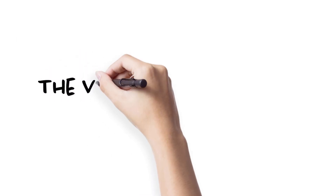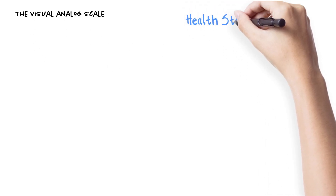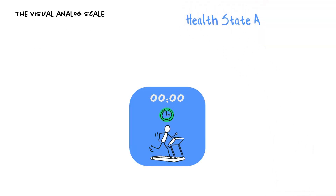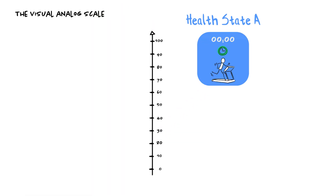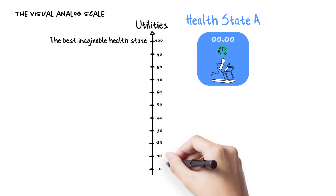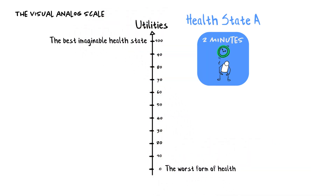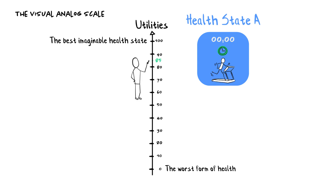Let's start with the most frequently used direct methods. The visual analog scale is the simplest approach to get a utility value. Imagine you want to value a health state A. You present the respondent a visual analog scale from 0 to 100, where 100 represents the best imaginable health state, while 0 represents the worst one. Note that 0 is not death. We ask respondents to evaluate the value of this health state on this scale.